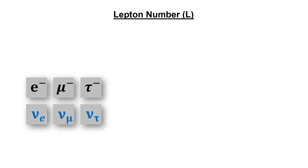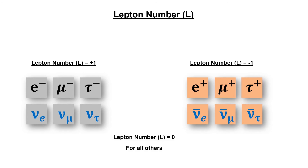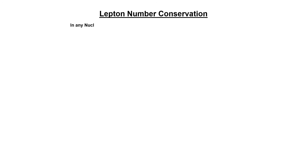To separate all leptons from each other, a new quantum number was defined called the lepton number. For all lepton particles, the lepton number is +1, while for all anti-lepton particles, the lepton number is −1. Particles which are not leptons have a lepton number of 0. Lepton number conservation is a universal conservation law — according to this, lepton number must be conserved in any nuclear reaction.